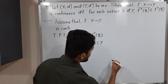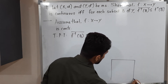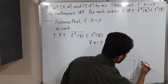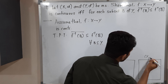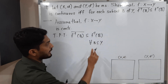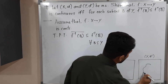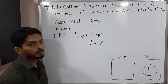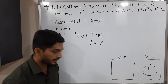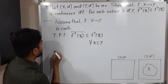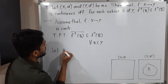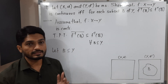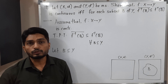Let me draw a diagram so the picture will be clear. We have two metric spaces: (X, d) and (Y, d'). We take one subset B of Y, and for this subset B we have to prove this relation. So let B be any arbitrary subset of Y, and we need to prove f⁻¹(B̄) ⊆ f⁻¹(B)̄.